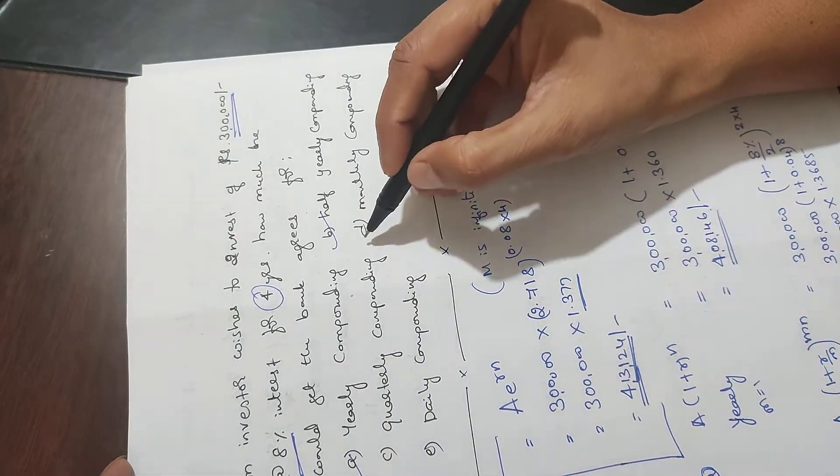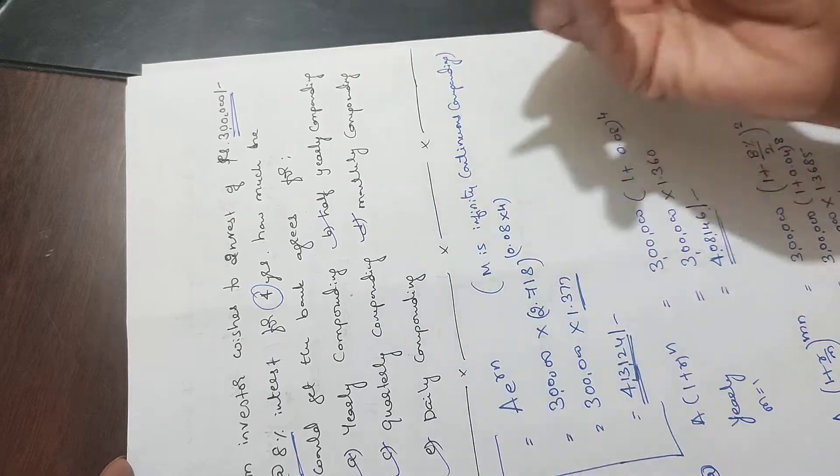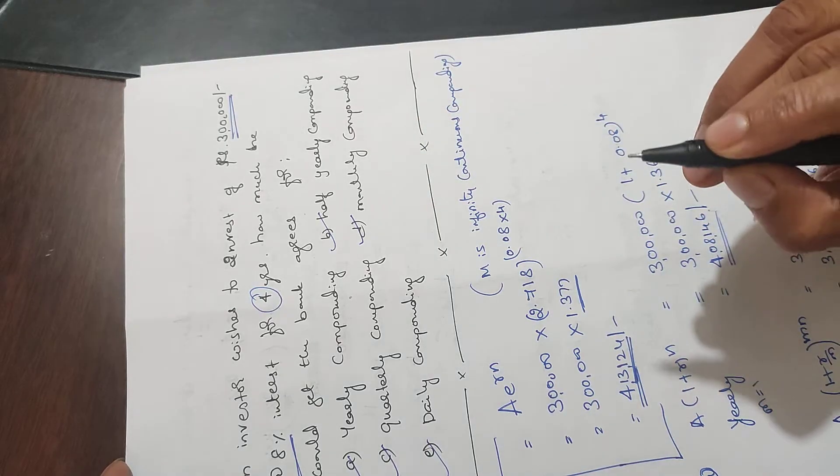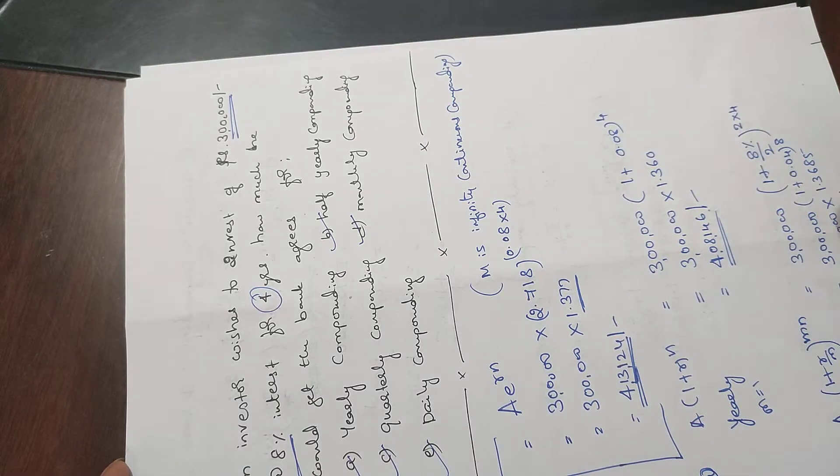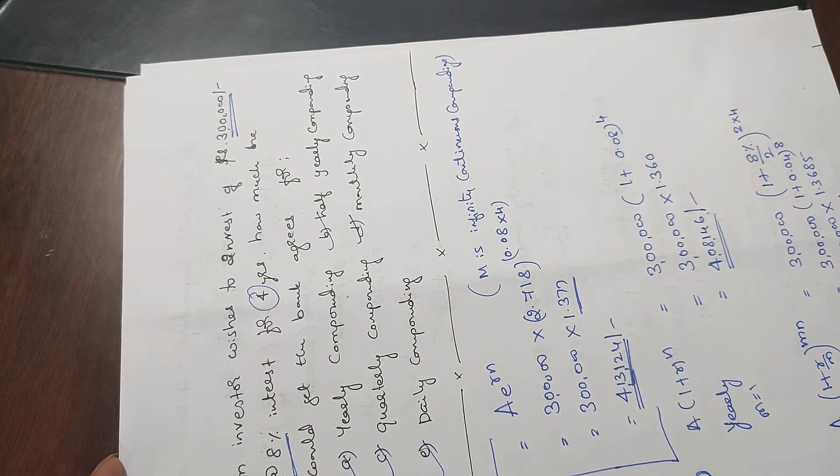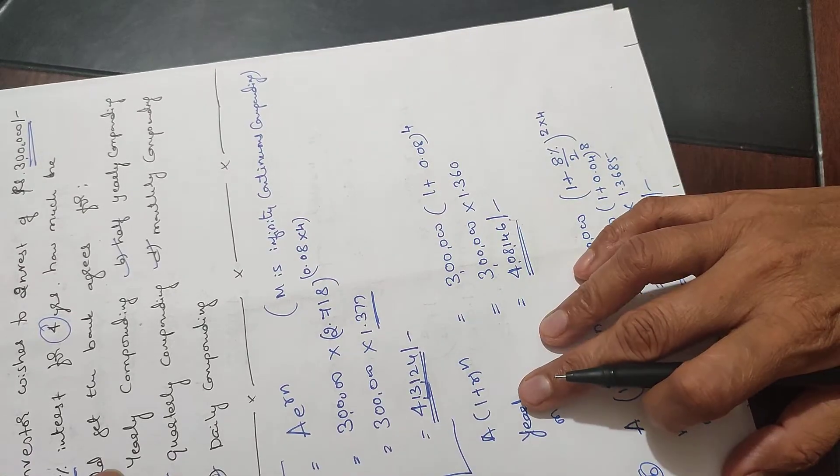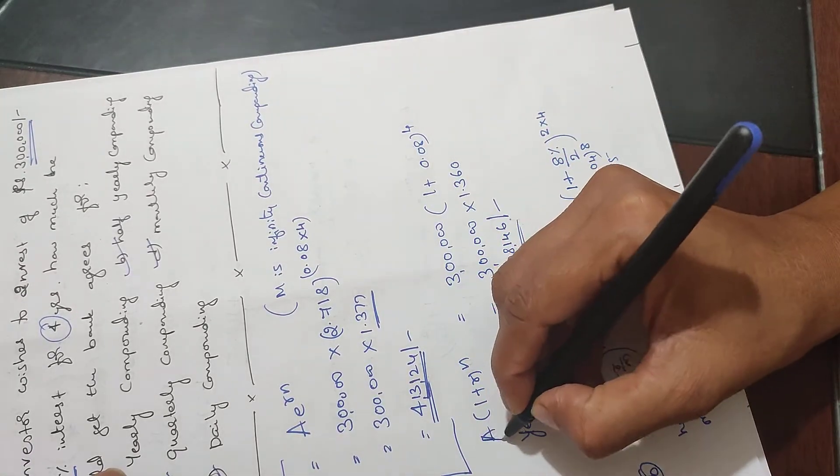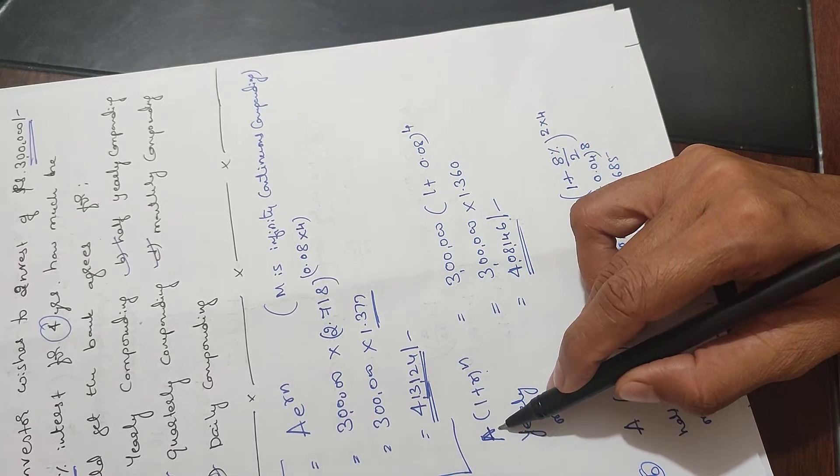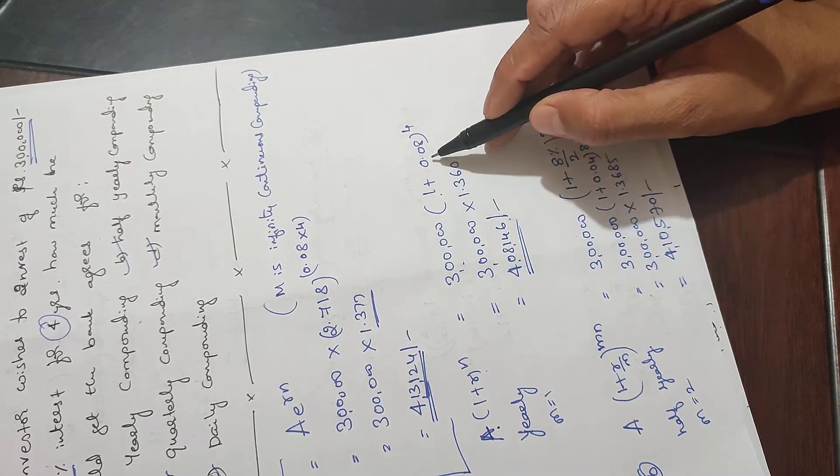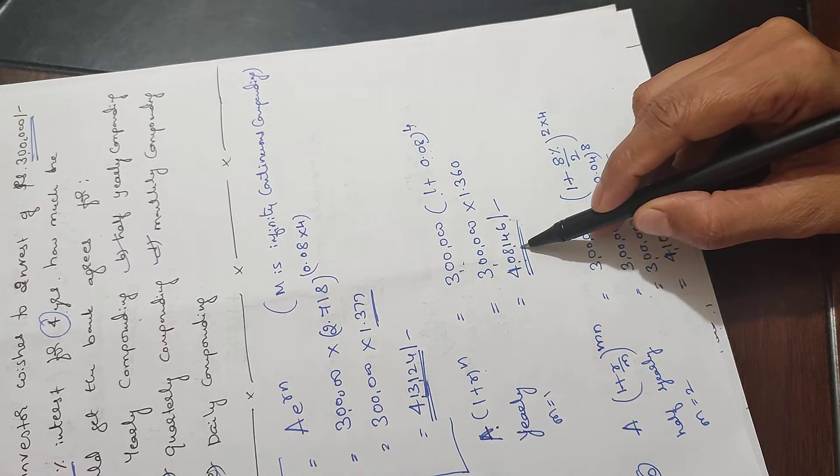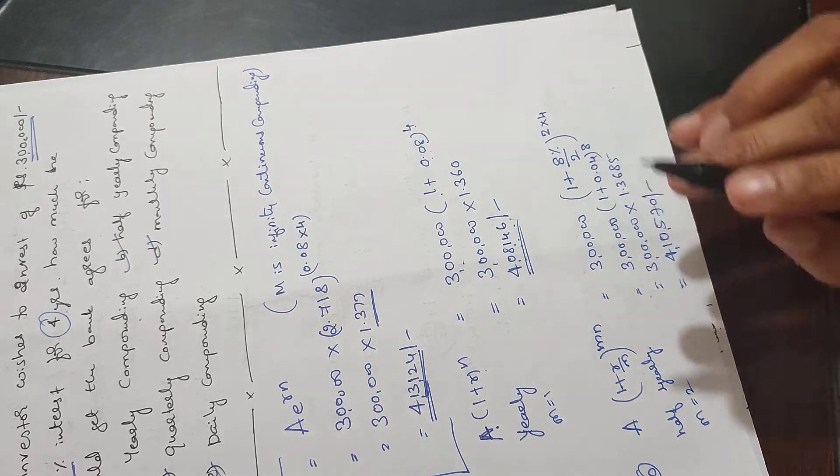Same formula applies for different compounding periods - daily compounding, quarterly compounding, monthly compounding, half-yearly compounding. For yearly compounding, the formula is A into 1 plus R raise to N. A is the initial investment, that is 3 lakh, 1 plus 0.08 for 4 years. So we get 4 lakh 8,146. This is yearly.